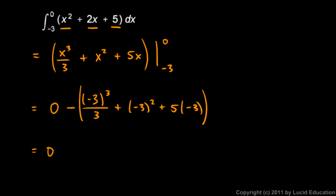This will be 0 minus, let's see, negative 3 cubed is negative 27 divided by 3 is negative 9. So we have negative 9 plus negative 3 squared here is a positive 9 plus negative 15. These cancel out, so we're left with minus negative 15, and that gives us 15.